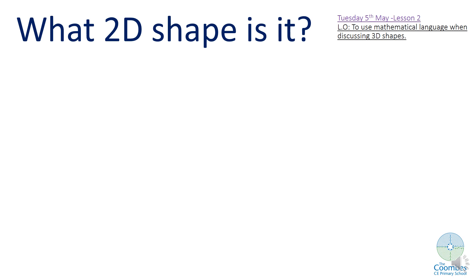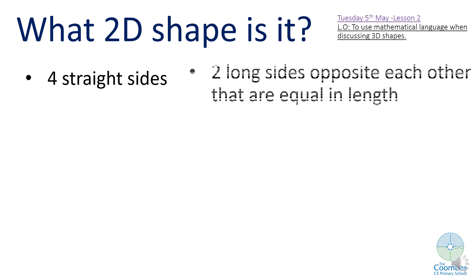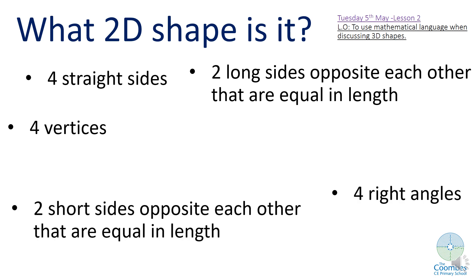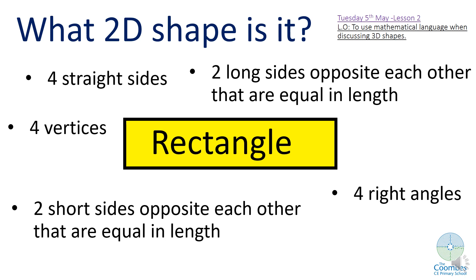Okay, which 2D shape is this? It has four straight sides. Two long sides opposite each other that are equal in length, four vertices, four right angles, and two short sides that are also opposite each other that are equal in length. What shape do you think it could be? Brilliant, well done. This is a rectangle, isn't it?